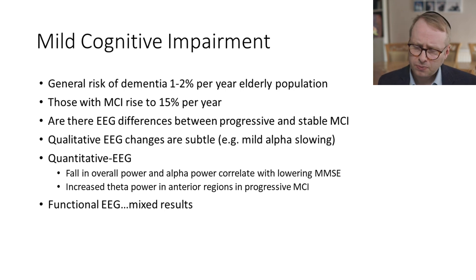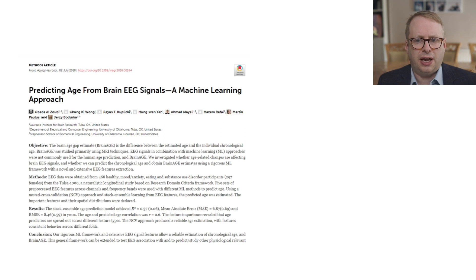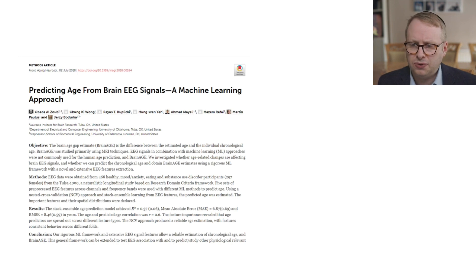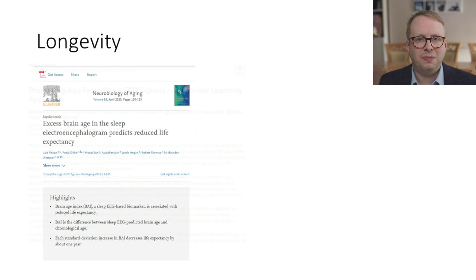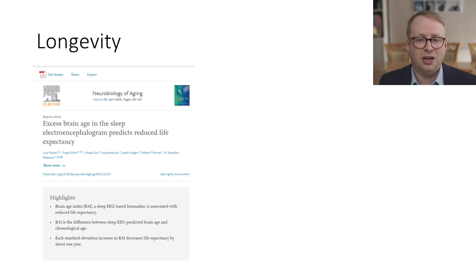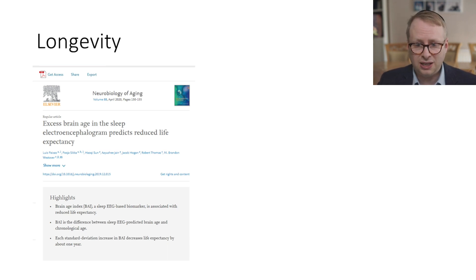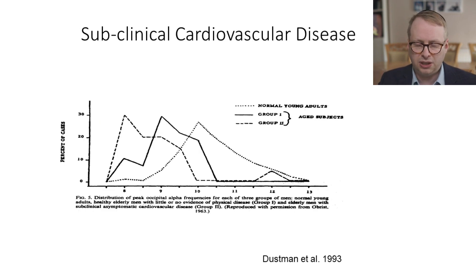If we look at functional EEG, we get mixed results, and it's not something which is particularly used outside of research settings. Can we predict age from EEG signals? People have looked at this very systematically, and there are ways of trying to do this. The important next question is: can you predict longevity? Various algorithms do exist which can help to predict longevity, particularly when there's an increasing difference between what we are seeing in terms of the EEG and the expected EEG for that particular age group.